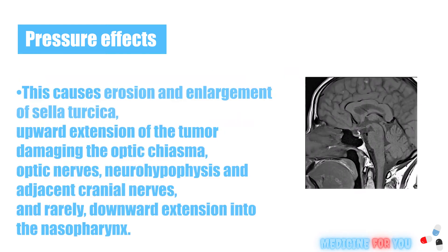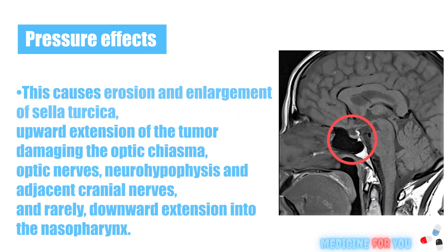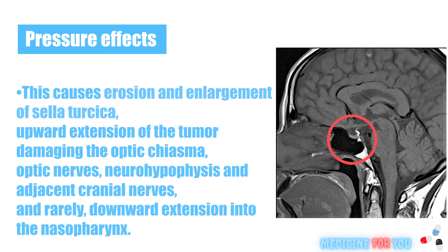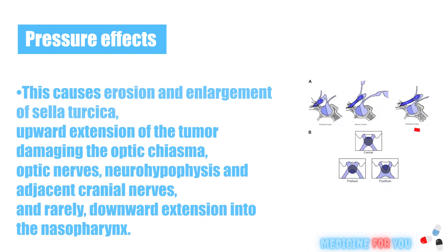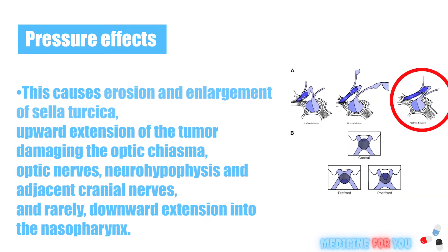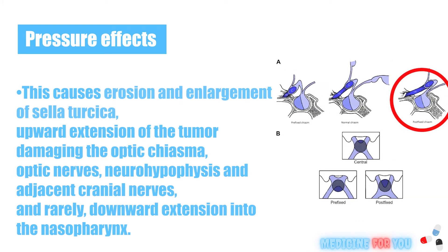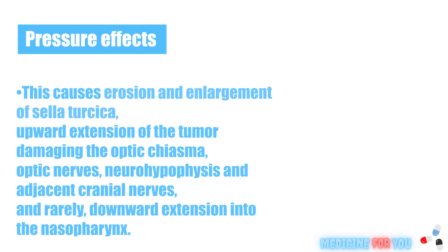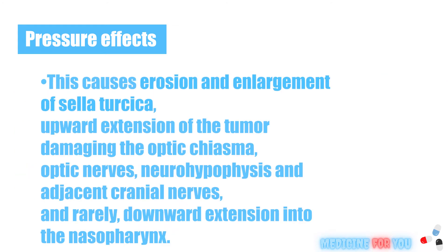Pressure effects cause erosion and enlargement of the sella turcica, upward extension of the tumor damaging the optic chiasma, optic nerves, neurohypophysis, and adjacent cranial nerves, and rarely downward extension into the nasopharynx.